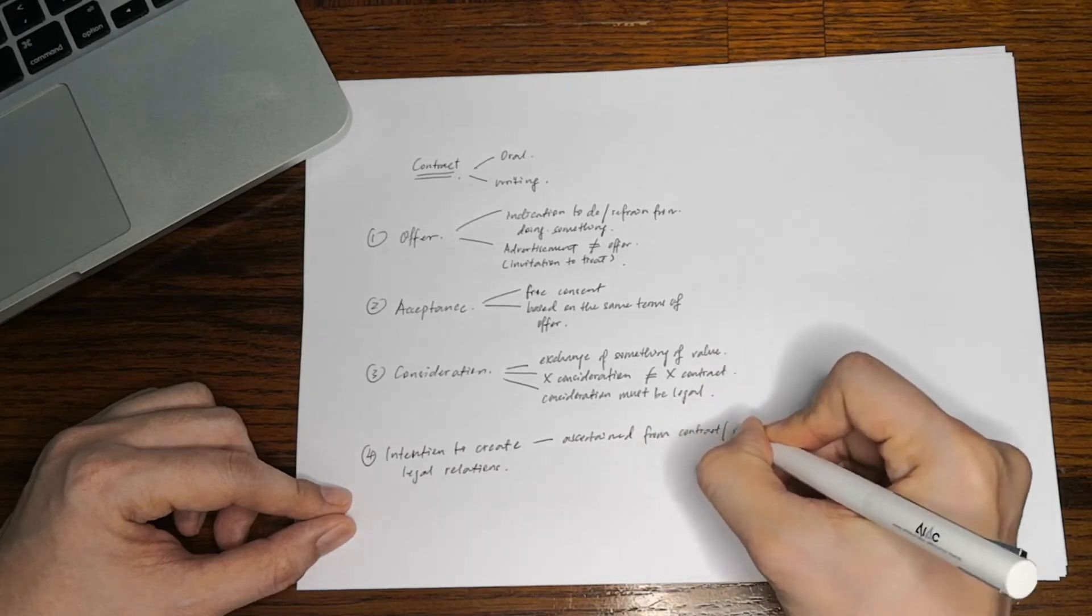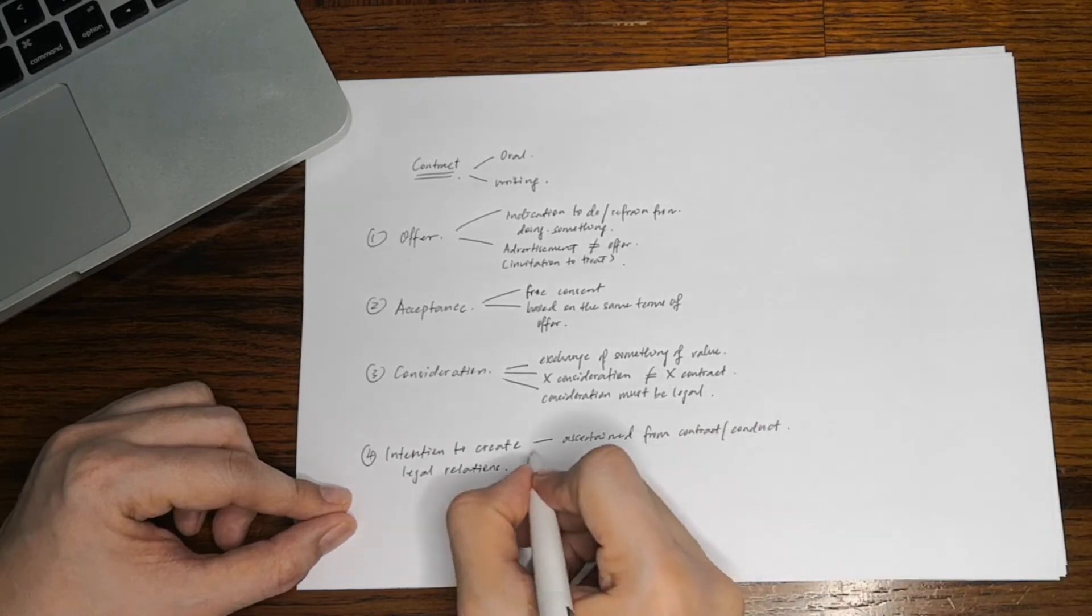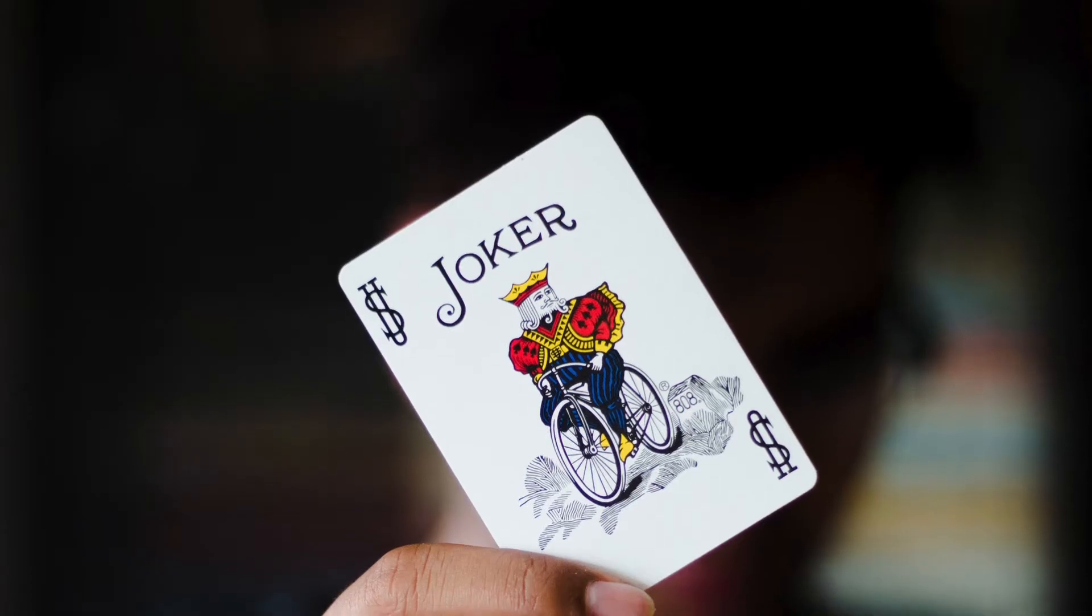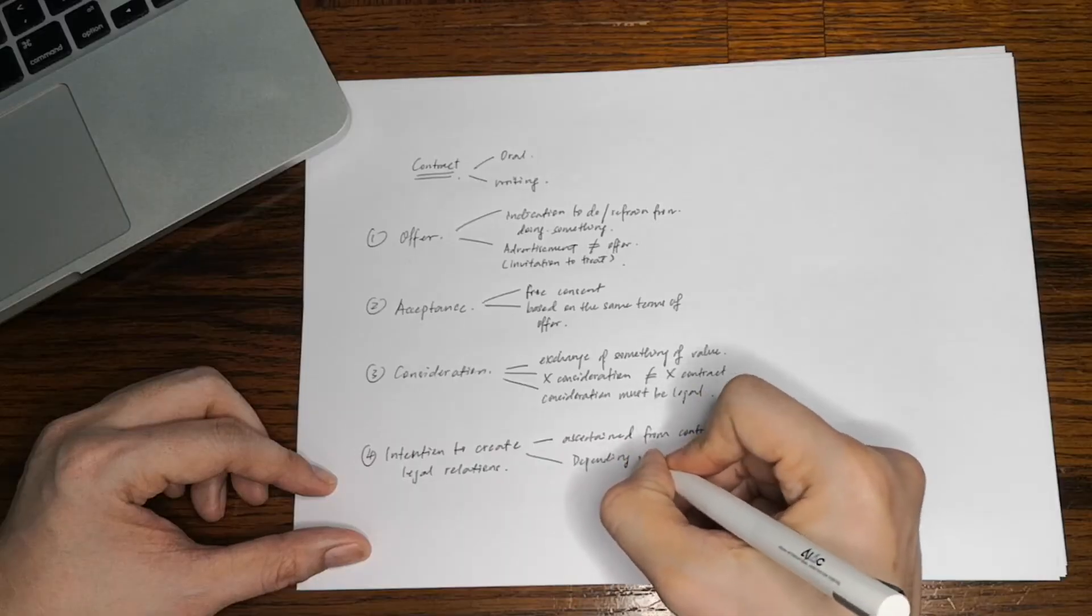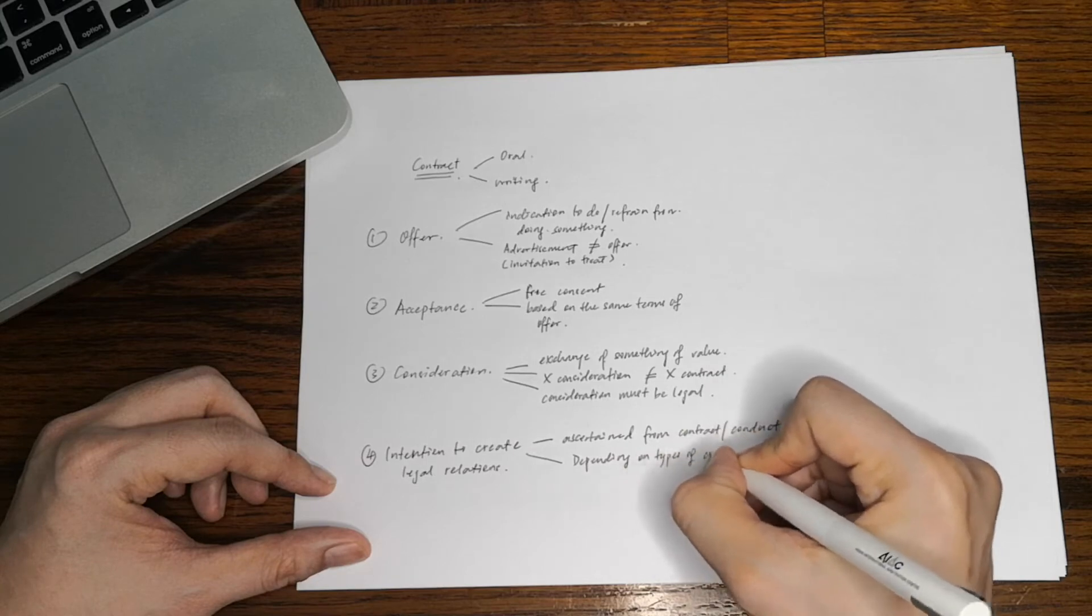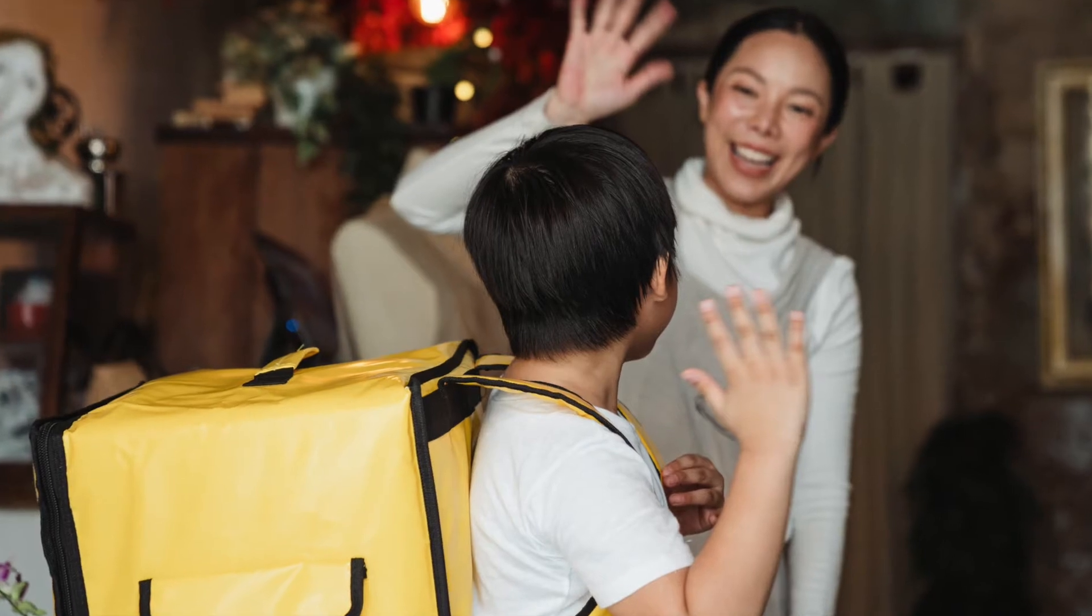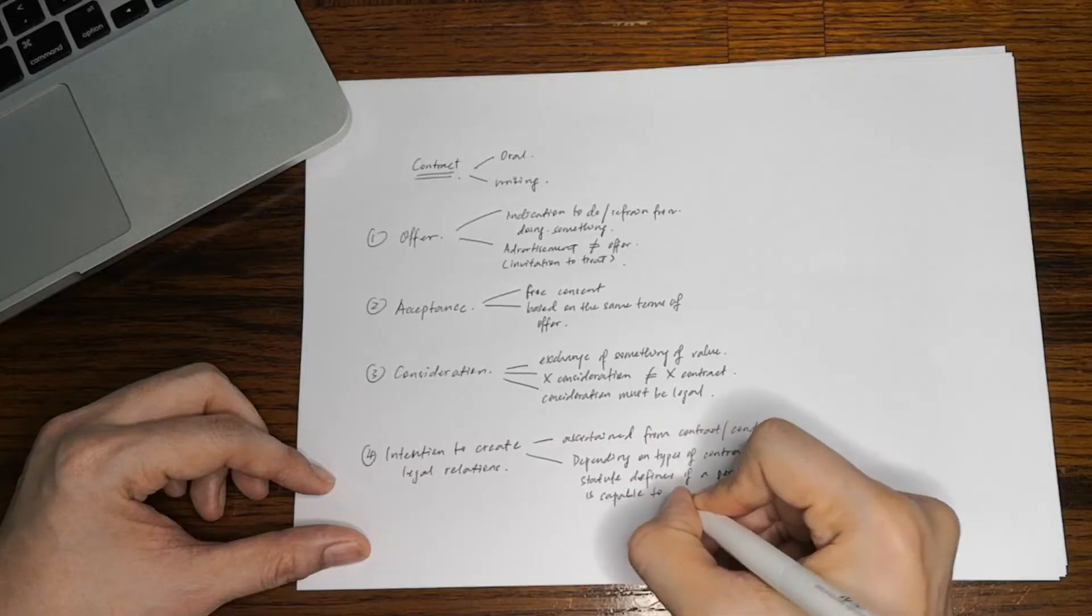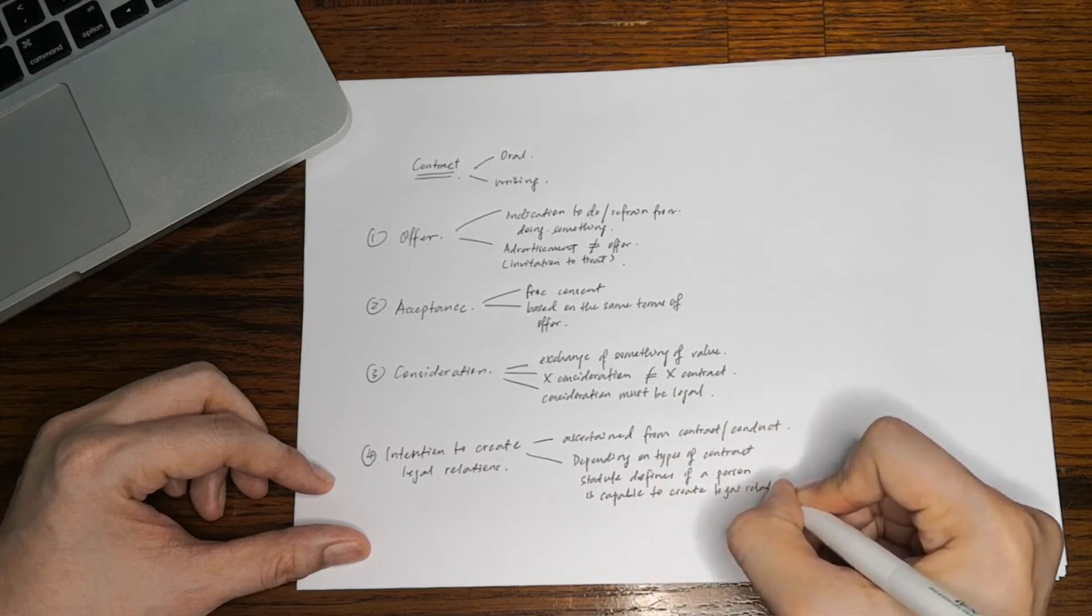However, in Malaysia there are laws that disqualify certain people having the capacity to create such legal relations, such as minors or one with an unsound mind. Whether one is of age to contract will also depend on the types of contract he enters into. For example, a 16-year-old cannot enter into a contract for a mortgage, but can enter into an employment agreement pursuant to the Children and Young Persons Employment Act 1966, or even a scholarship agreement.